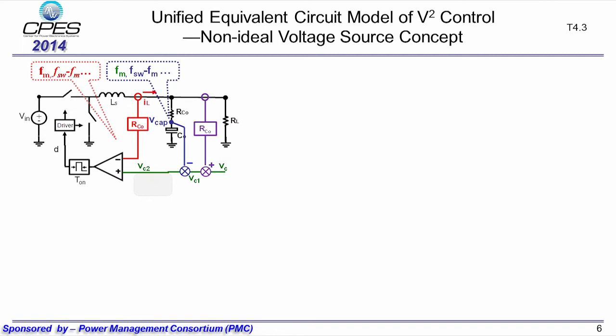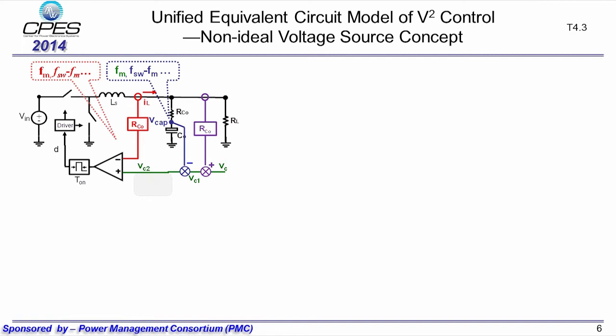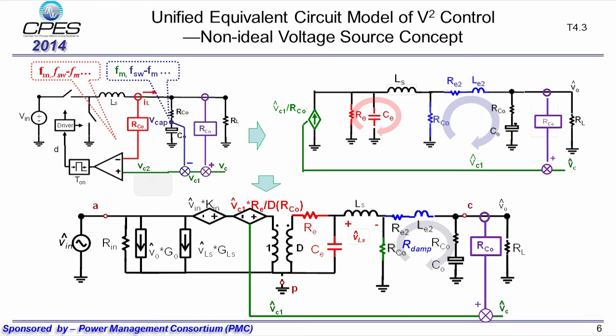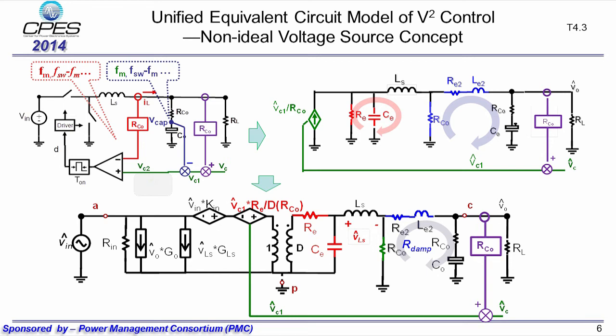For the general case, the inductive current sideband information also needs to be considered. The equivalent circuit reveals that the inductive current feedback turns the power stage into a non-ideal current source, shown in the equivalent circuit by resonance between CE and LS. The capacitor voltage feedback turns the current source into a non-ideal voltage source, shown by resonance between LE2 and output capacitor CO. By also considering the input property in the same way as in current mode control, we can get the complete equivalent circuit model, which can be used to derive all transfer functions.